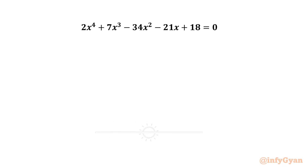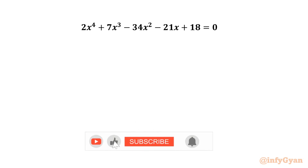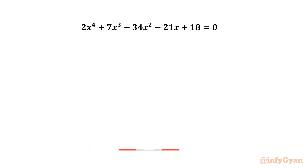Hello my dear friends, welcome back to Infigyan. Today in this video we are going to take up another very interesting question from quadratic equations: 2x⁴ + 7x³ - 34x² - 21x + 18 = 0.